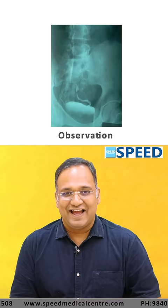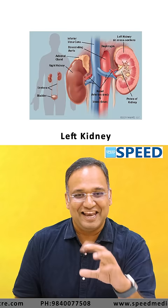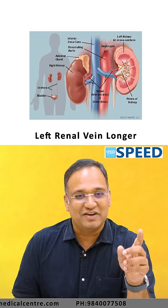For a transplanted kidney, the most common ectopic location is the right iliac fossa. The most common kidney that is transplanted is the left kidney, because the left renal vein is longer than the right renal vein, which is used for ease of anastomosis.